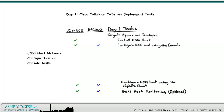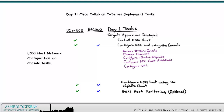Our ESXi Host Network Configuration via Console tasks are: Access the VMware Console, Change the ESXi Host Password, Configure the vSwitch0 uplinks, Configure the ESXi Host IP Address, Configure DNS, Hostname, and DNS suffixes, Download and install the vSphere client, and Access the vSphere GUI.